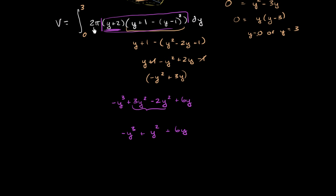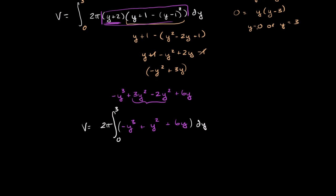We can take the 2π out of the integral sign. So let's do that. We're integrating from y equals 0 to y equals 3 dy. And I took the 2π out here. And that is equal to our volume. And so now we're essentially ready to take the antiderivative.